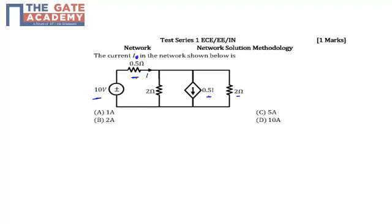We can see that in the network, we have a 1.5 ohm resistor in series with a parallel combination of three components: the 2 ohm resistor, 2 ohm, and the 0.5I dependent source.